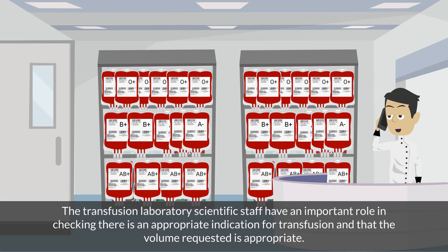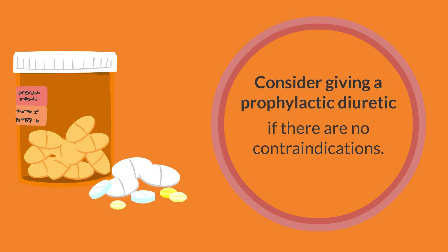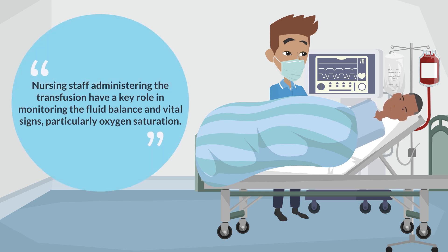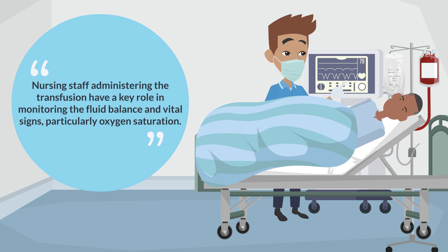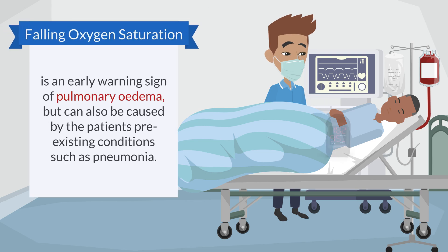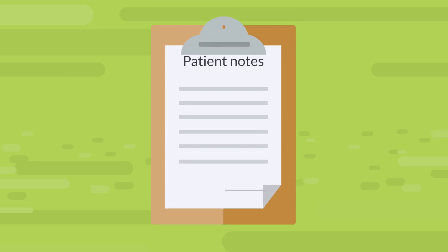The transfusion laboratory scientific staff have an important role in checking there is an appropriate indication for transfusion and that the volume requested is appropriate. Consider giving a prophylactic diuretic if there are no contraindications. Nursing staff administering the transfusion have a key role in monitoring fluid balance and vital signs, particularly oxygen saturation. A falling oxygen saturation is an early warning sign of pulmonary oedema, but can also be caused by the patient's pre-existing conditions such as pneumonia. Therefore it is essential to document the start time of the transfusion.